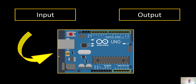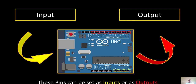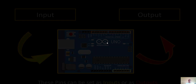For inputs and outputs on Arduino, we always use those pins — either the analog pins, which can be used as inputs, or the digital pins from 0 to 13, which can be used as outputs.